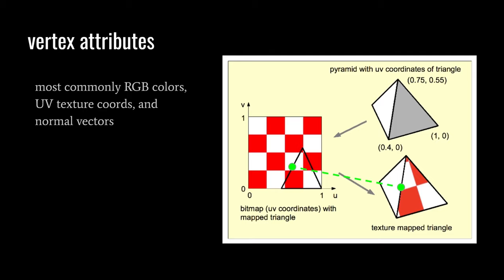So when on our view plane, for a pixel, we want to figure out what the corresponding UV coordinate should be, we can't just do a straight linear mapping. We have to account for perspective.